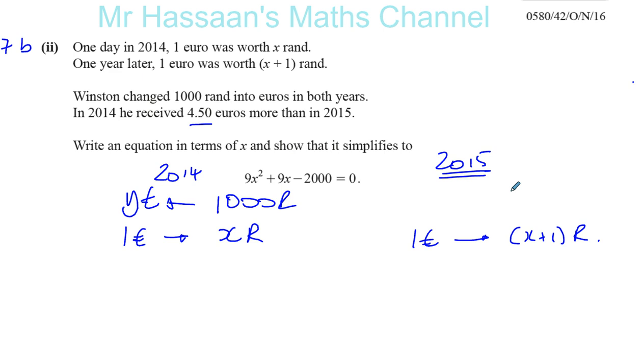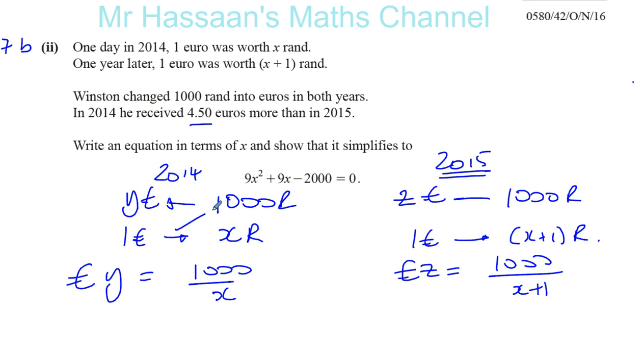So here he changed 1,000 rand and let's say he got z euros. Because these are not the same, are they? All right. So we want to find out how many euros did he get first. In 2014, the number of euros he got was 1,000 over x. And the number of euros he got in 2015, that's going to be 1,000 over x plus 1. Just simple proportion, right? It's 1,000 times 1 over x plus 1. Just cross multiplying.